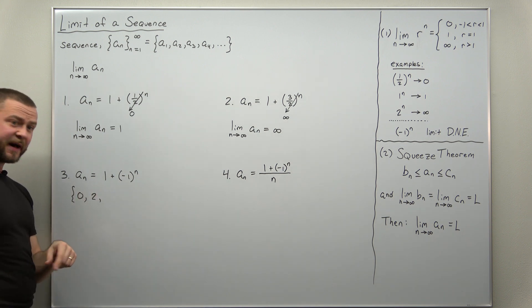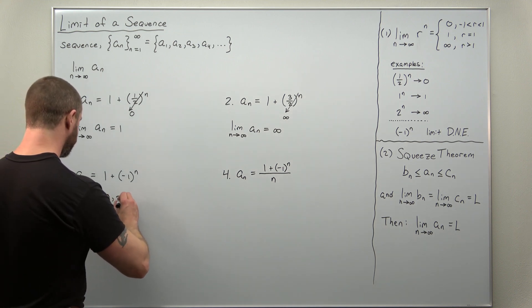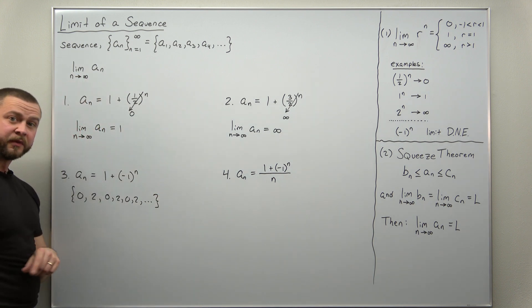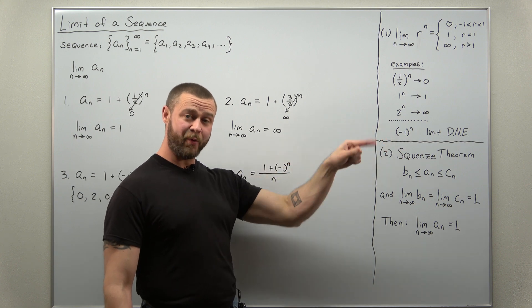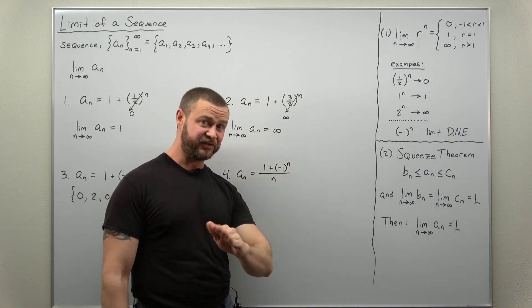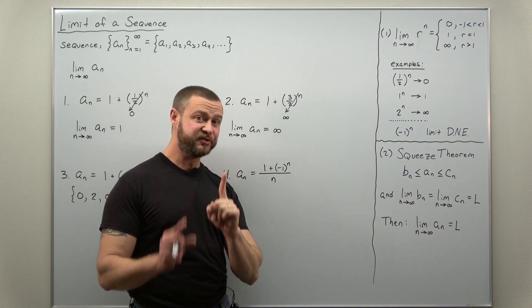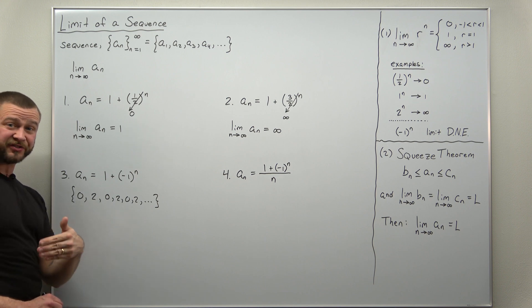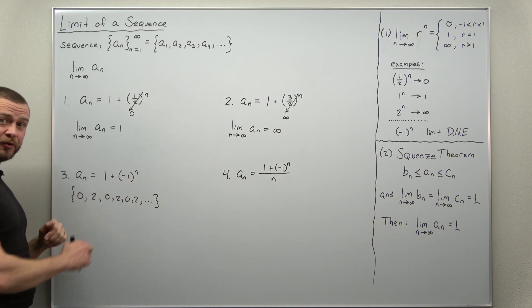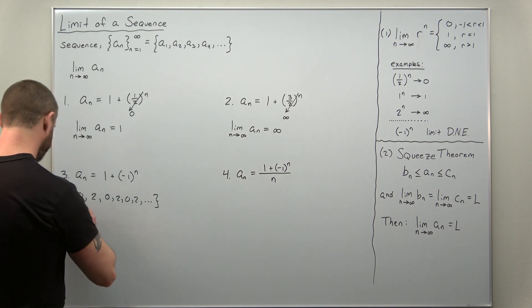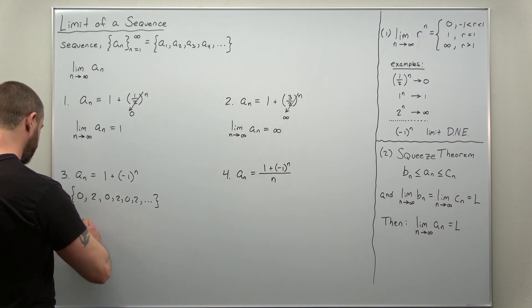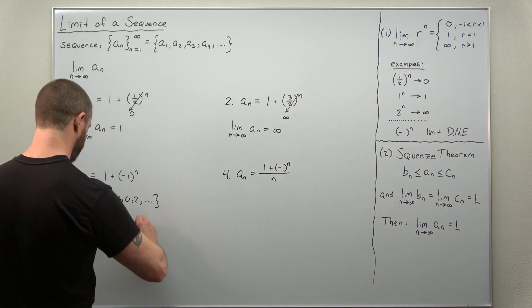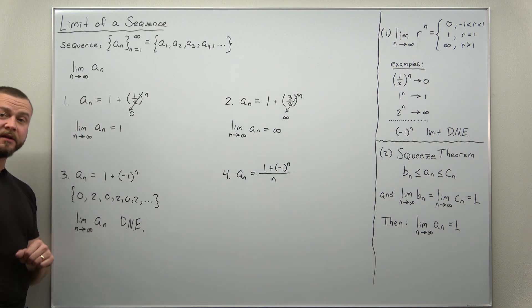And you can probably see the pattern here. This is going to alternate back and forth between zero and two forever. Just like this term, negative one to the n, that sequence has a limit that does not exist because the terms do not approach a single number. Here it's very similar, but your terms approach two different values, zero or two. So this limit does not exist. So we would write here the limit as n approaches infinity of that term a sub n, that limit does not exist.